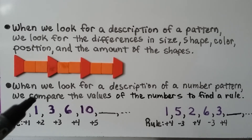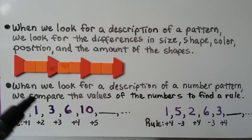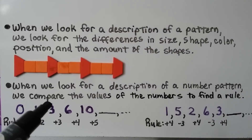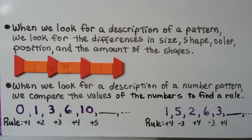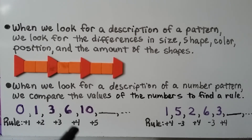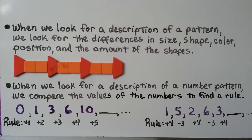The numbers 0, 1, 3, 6, 10 follow a pattern: 0+1=1, 1+2=3, 3+3=6, 6+4=10. The rule is adding incrementing values: +1, +2, +3, +4. So the next number is 10+5=15. We could keep going, adding more numbers by continuing to increase the amount added each time.